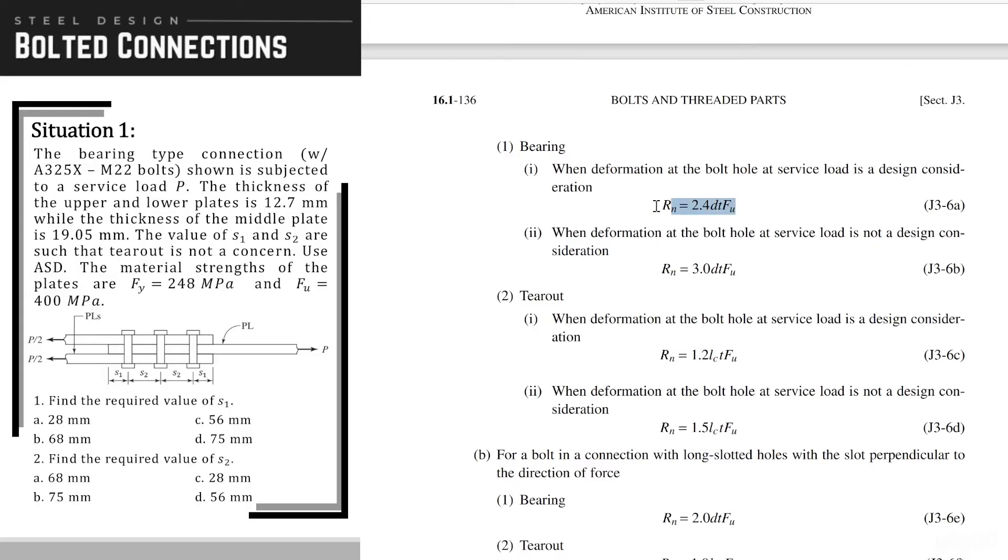Therefore, for bearing, we will use Rn equals 2.4dtFu, while for tear-out, we will use 1.2Lct times Fu.